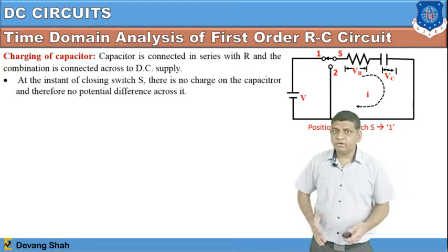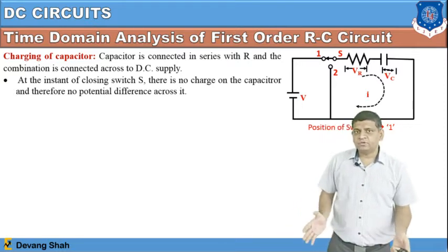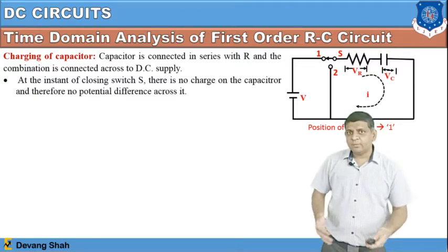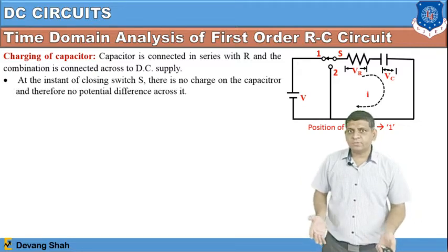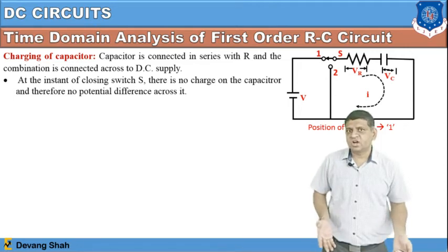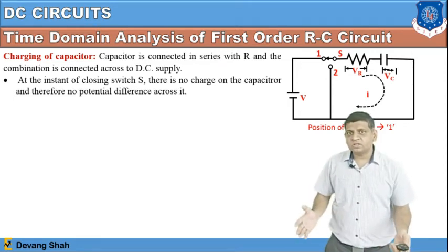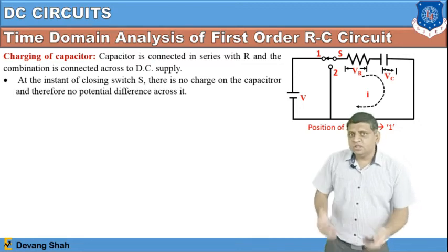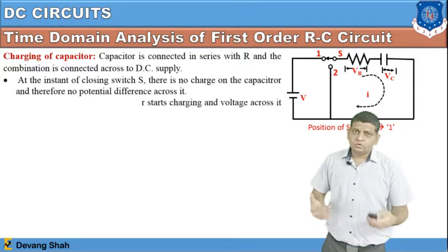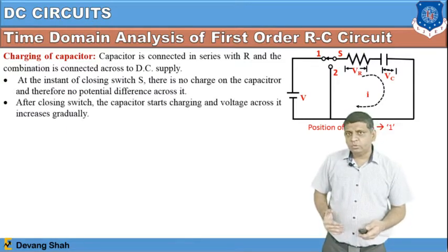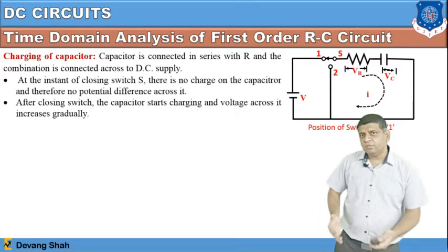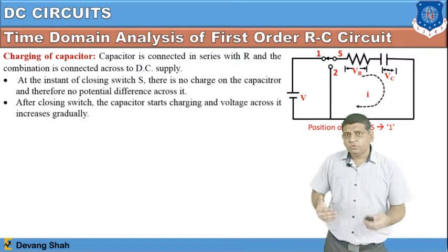In our previous session we discussed that both inductor and capacitor are related with time. Once you apply a DC source to an inductor or capacitor, they are going to charge; once you remove the voltage source, they are going to discharge. This charging process is not instantaneous but is a gradual process. Today's session we are going to learn how to charge the capacitor and how to discharge it — our aim is to observe the behavior of charging and discharging of the capacitor.